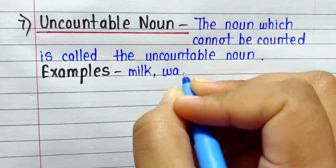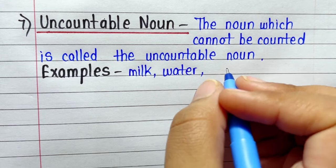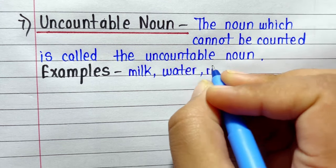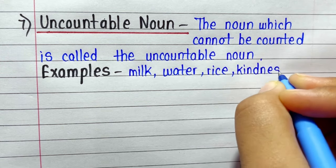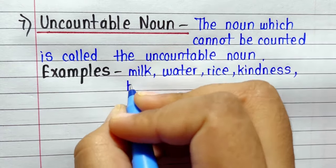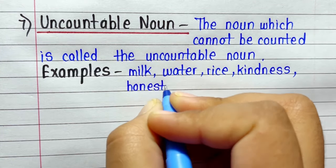Number seven: Uncountable Noun. The noun which cannot be counted is called the uncountable noun. Examples: milk, water, rice, kindness, honesty, etc.